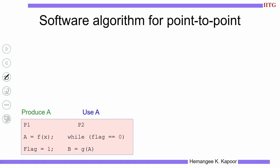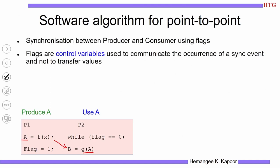This is a familiar example from the memory consistency module. P1 is the producer process and P2 is the consumer process. P1 generates the value of A and P2 consumes the value of A. We want the value produced by P1 to be the one used by P2. When P1 produces A, only then P2 should start consuming. Hence we use a flag variable. The flag is used as a control variable to communicate between the two processes, not for data transfer.